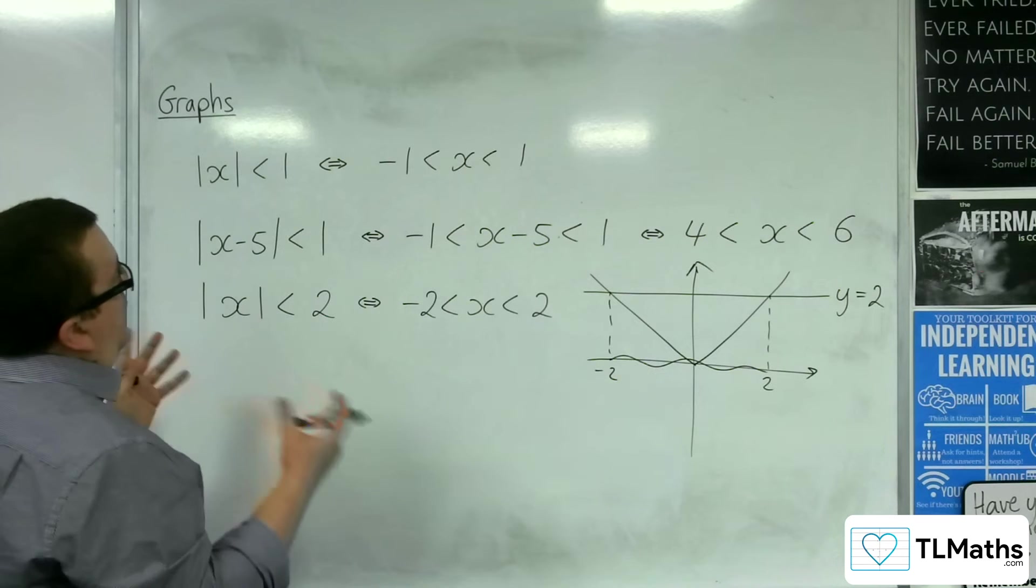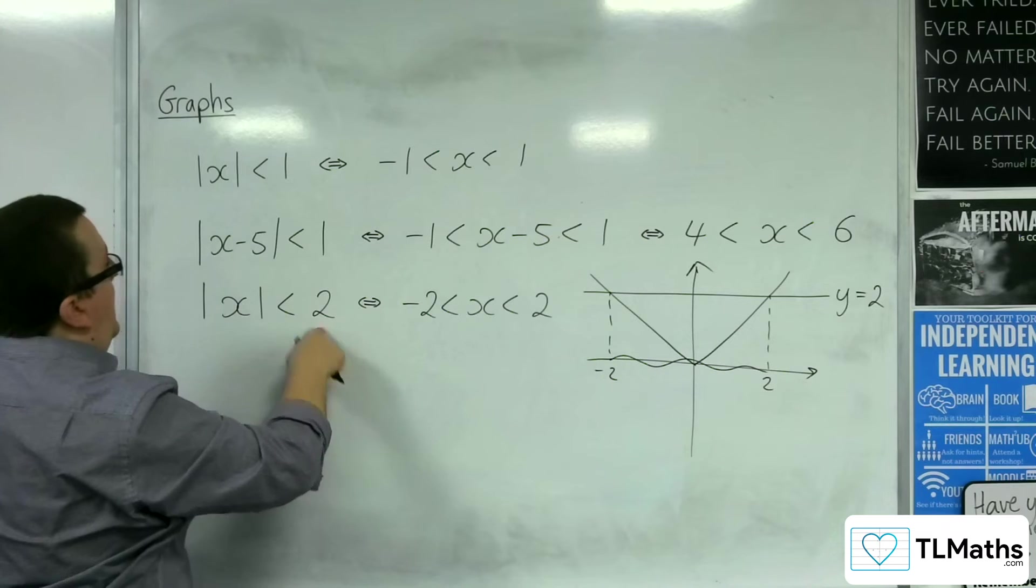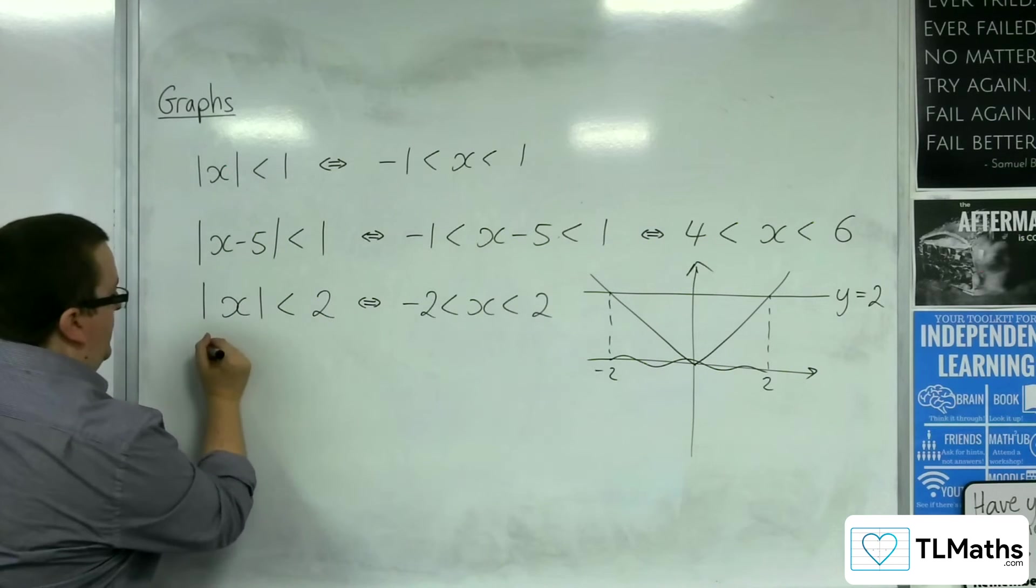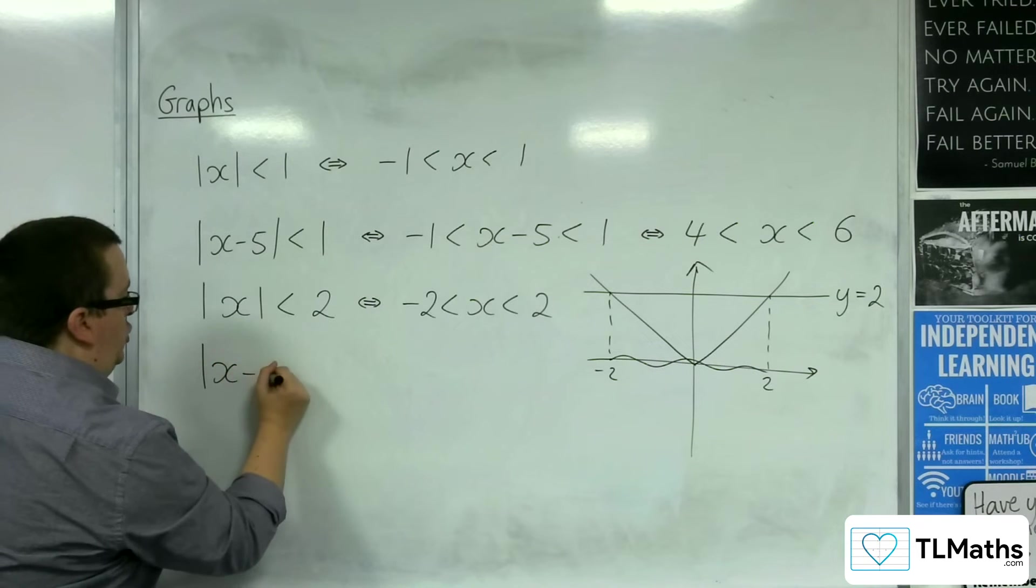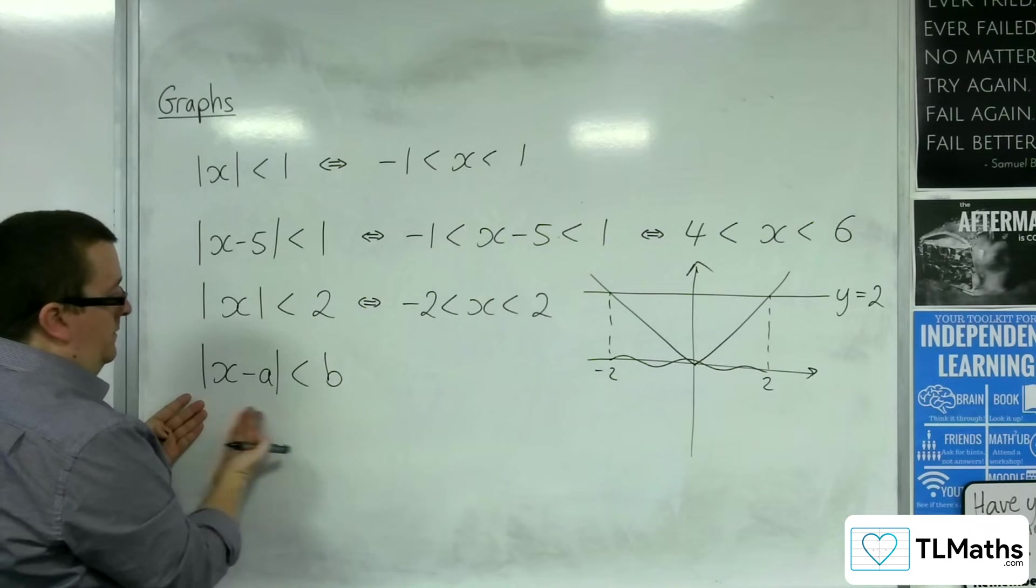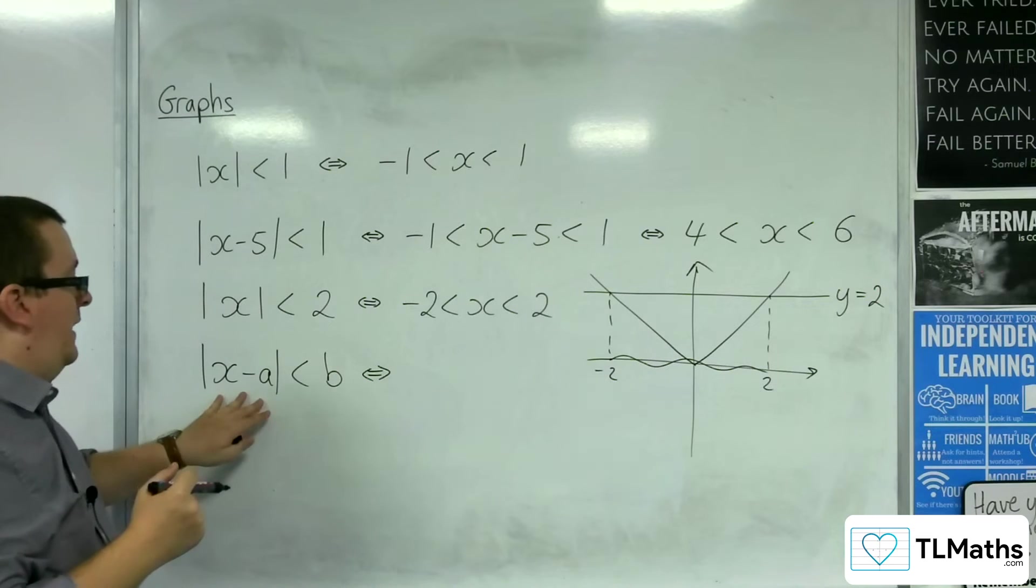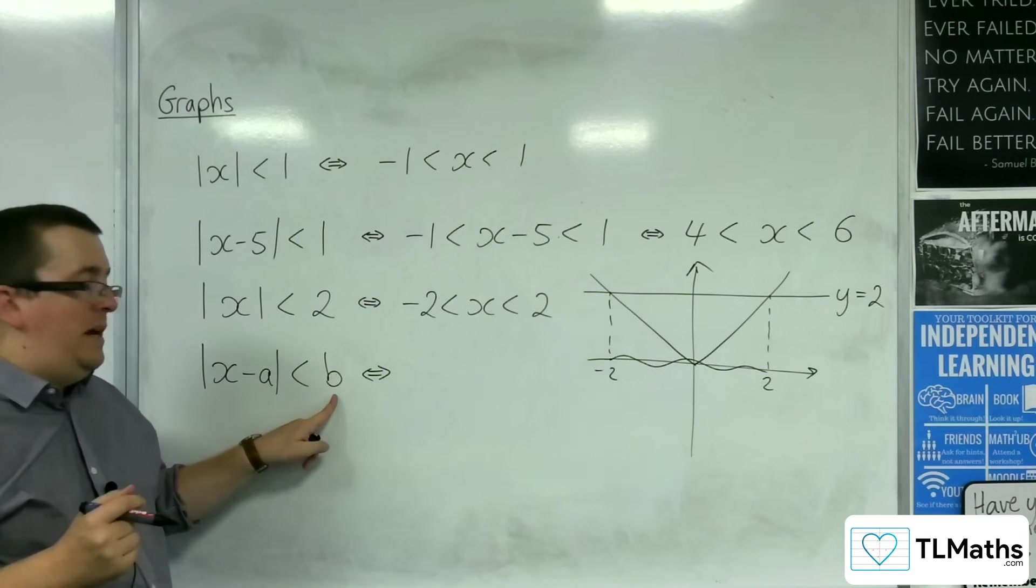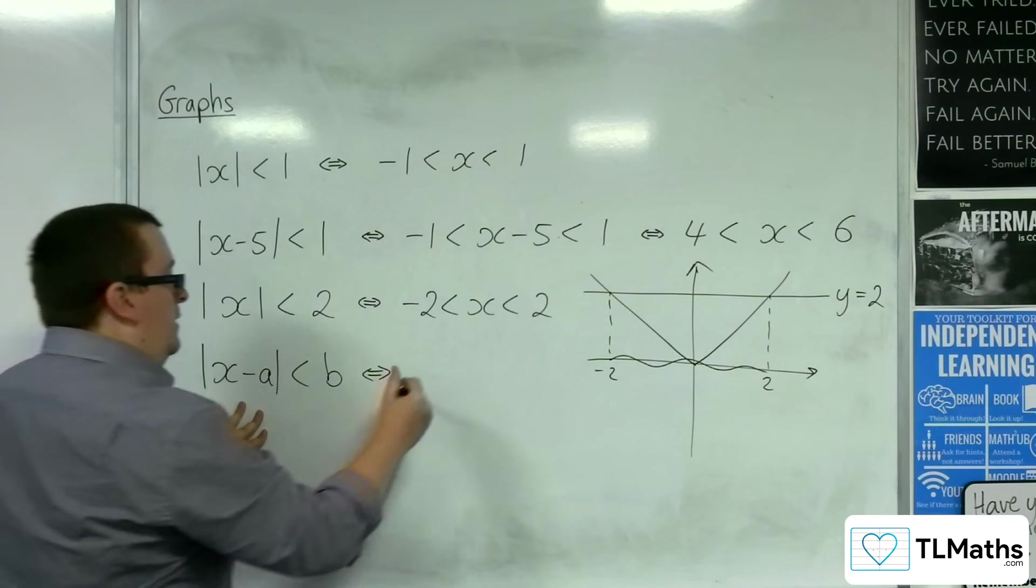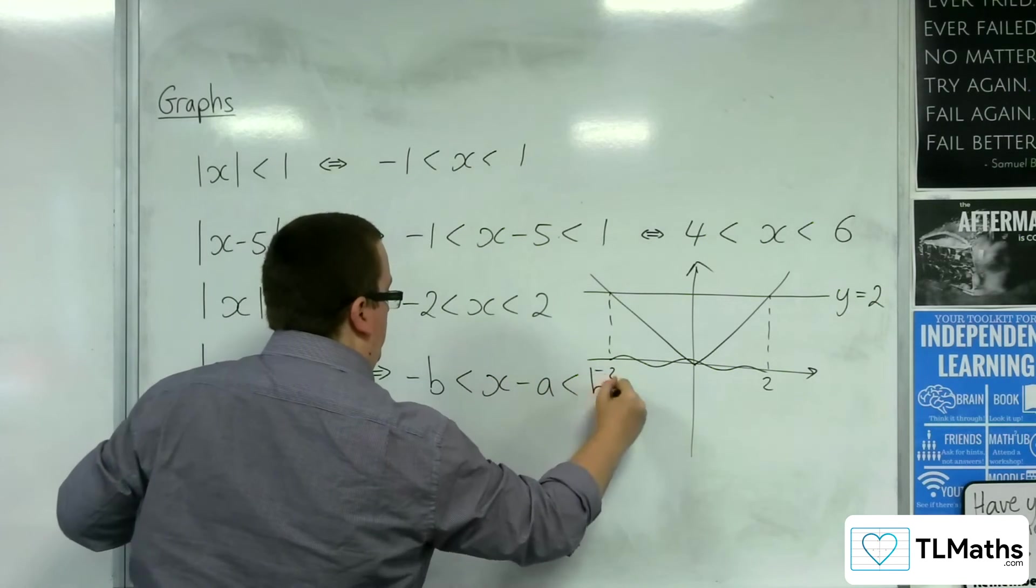So, now I know how I can affect this number on the outside. And I know how I can affect something on the inside. I would be able to write down that in general, then, this inequality here is equivalent to writing down that x minus a is between minus b and b. Just as this was between minus 2 and 2. So, minus b is less than x minus a is less than b.